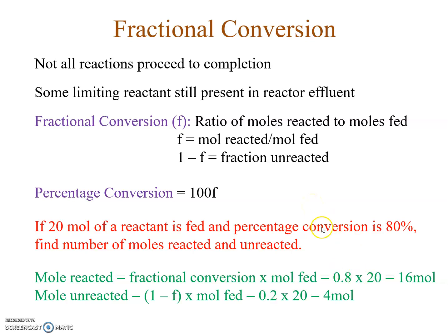One more important concept is fractional conversion. Not all reactions proceed to completion — even the limiting reactant may not be fully consumed. Fractional conversion f is defined as moles reacted divided by moles fed, so (1 − f) gives the fraction unreacted, and percentage conversion is f × 100. For example, if 20 moles of a reactant is fed and conversion is 80%, then moles reacted = 0.8 × 20 = 16 moles, and moles unreacted = 4 moles.